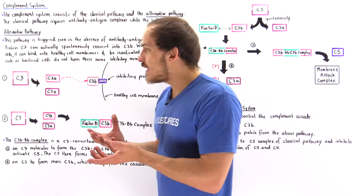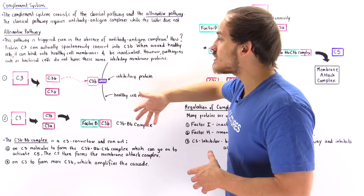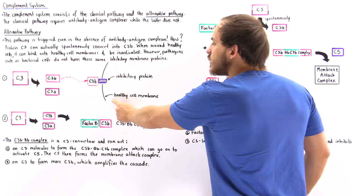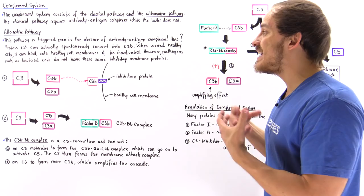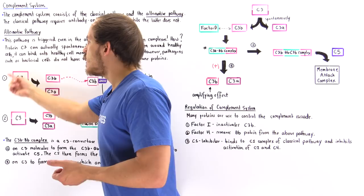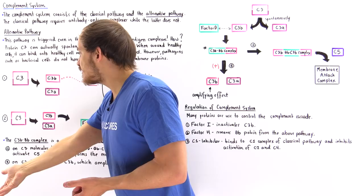Now, under normal conditions, when we don't have any pathogenic agents — for example, bacterial cells in our body — when we only have normal cells around these molecules, the C3b quickly attaches onto a special inhibitory protein found on the membrane of nearby healthy cells. That inhibitory protein inhibits and deactivates the C3b molecule, and then that molecule is essentially recycled to form something else, perhaps another C3 molecule. So under normal conditions, in the absence of any type of pathogens, C3 spontaneously breaks down, but this is quickly inhibited and recycled.